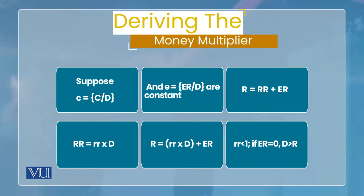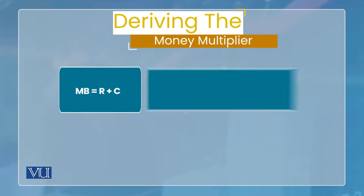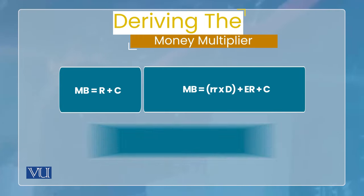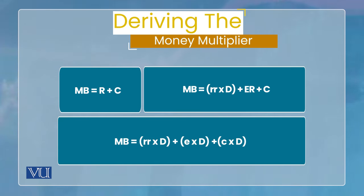لیکن ہمیں money multiplier کے formula تک پہنچنا ہے، تو اب ہم monetary base کی definition use کرتے ہیں۔ monetary base کی definition ہے: total reserves + currency۔ تو monetary base = (rr × D) + excess reserves + currency۔